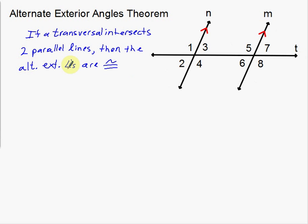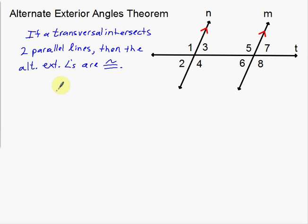Using my abbreviations, my notation, my shorthand here, to say alternate exterior angles are congruent. So that is what the theorem states. Now, what I'm also going to do is write down the actual angles that are congruent. So 1, 2, 7, and 8 are the exterior angles, so 1 and 8 is one pair.